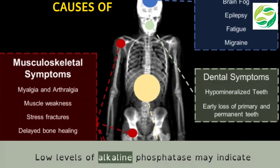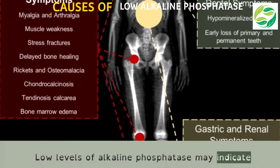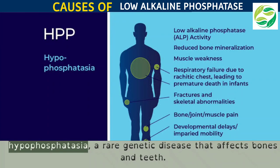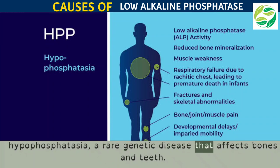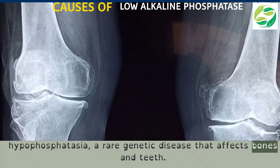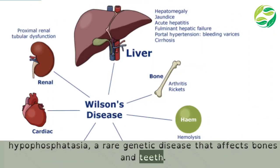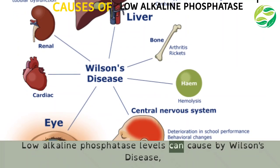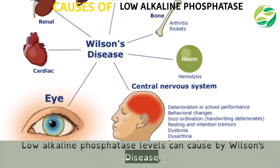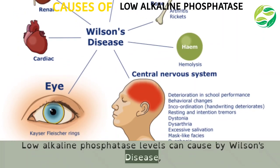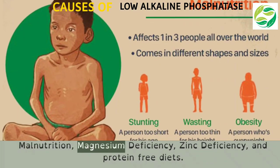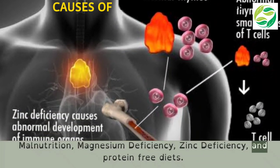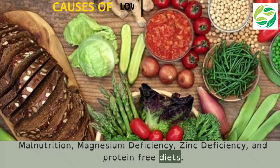Causes of low alkaline phosphatase: Low levels of alkaline phosphatase may indicate hypophosphatasia, a rare genetic disease that affects bones and teeth. Low alkaline phosphatase levels can also be caused by Wilson's disease, malnutrition, magnesium deficiency, zinc deficiency, and protein-free diets.